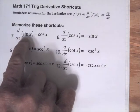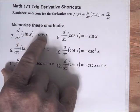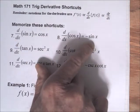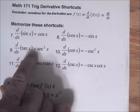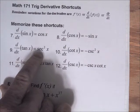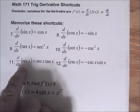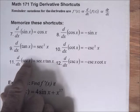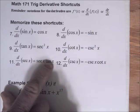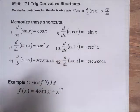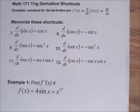The derivative of sine is equal to cosine. The derivative of cosine is minus the sine. The derivative of tangent is secant squared. The derivative of cotangent is minus cosecant squared. The derivative of secant is secant times tangent. The derivative of cosecant is minus cosecant times cotangent. I will go over some of the proofs of these shortcuts.